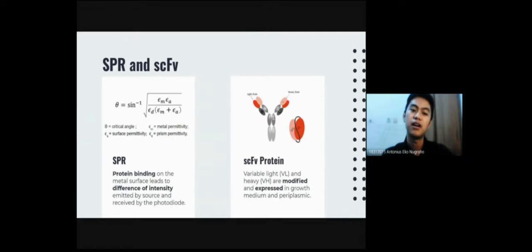And then, about the SPR and the SCFV itself. SPR or surface plasma resonance is a tool for analyzing the protein binding activity, which causes the change of surface permittivity. The surface permittivity, which based on this formula, when the surface permittivity is changed, so the critical angle is also changed. The change of critical angle creates a difference of intensity emitted by the source and received by the photodiode. Therefore, this technique has the output of the value of intensity.